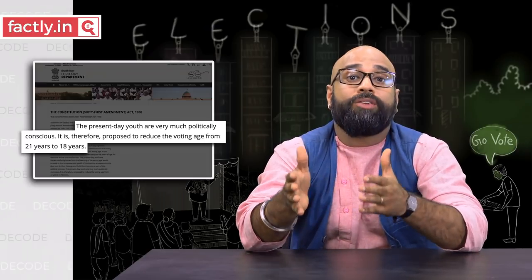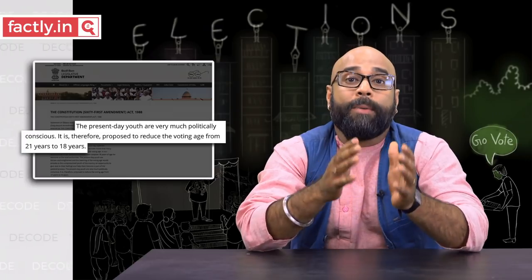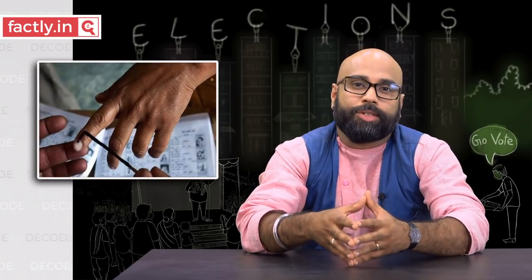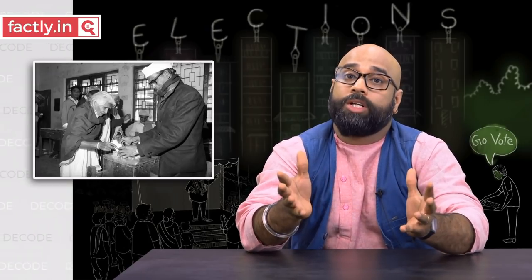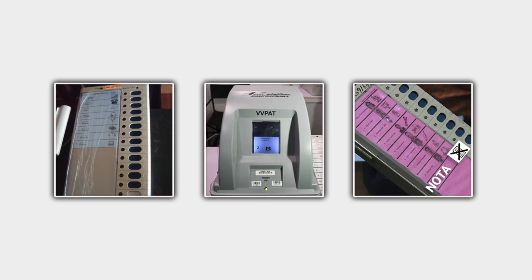Along with these steps, the ECI, the government and the political parties joined hands to bring several improvements in our election process. As the literacy rate improved, voting age was brought down from 21 to 18. To stop impersonation, marking voters' fingers with the iconic indelible ink was introduced. The most notable change was that what started as one ballot box per contestant was replaced by a single ballot box. Electronic voting machines or EVMs were introduced as technology made progress. Voter Verifiable Paper Audit Trail or VVPAT was introduced recently for increasing transparency. Another significant change was the availability of the NOTA or None of the Above option.